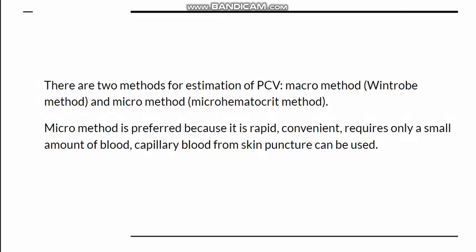There are two methods to estimate hematocrit: the macro method and the micro method. The macro method requires more blood and uses the Wintrobe's tube, which is also used for ESR estimation — so if both ESR and PCV are needed, the Wintrobe's method can be used. The micro method, or microhematocrit method, requires a very small amount of blood and is mostly preferred because it is rapid, convenient, and uses very little blood.